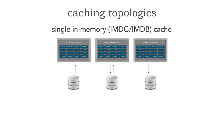The first topology we're looking at is a single in-memory data grid or database cache. In this model, which is the simplest form of caching, we've got various services or applications accessing the database. In order to increase performance, we want to cache some of that data using an in-memory cache, either an in-memory data grid or an in-memory database that we can use SQL queries against, where that data is actually in-memory within that particular component or service or application. There's a client library associated with this so I don't have to go to the database for every single call.